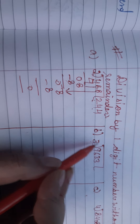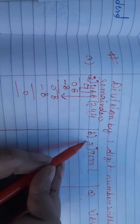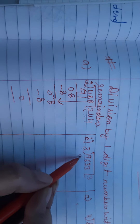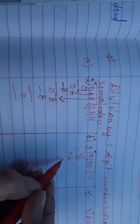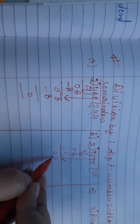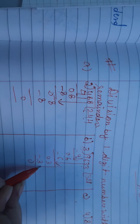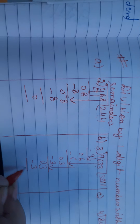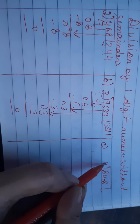Now I have to solve this question. We will read the table of 3 and find out if 9 is a multiple of 3. Yes, it is a multiple of 3. 3 threes are 9, then 0. We will bring down the 6 here. 3 twos are 6, then 0. Then I will bring down the 3 here. 3 ones are 3, minus 0. Then I will bring down the 3 here. 3 ones are 3. So our answer will be 3211.